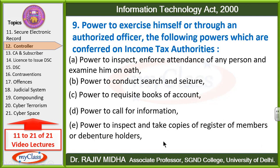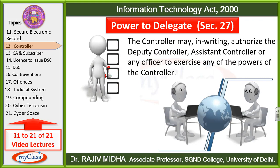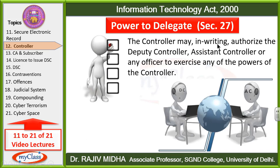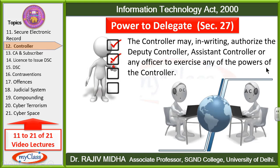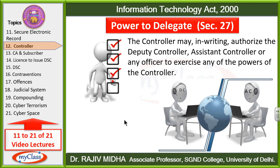E) Power to inspect and take copies of register of members or debenture holders — kisi bhi company se related controller ke paas powers hai ki woh unke members ka register manga sake ya register of debenture holders manga sake aur unhe inspect kar sake ya unki copies le sake. Power to make inquiries — controller writing ke andar de sakta hai aur us ke andar woh authorize kar sakta hai deputy controller, assistant controller ya kisi bhi officer ko apni powers delegate kar sakta hai.